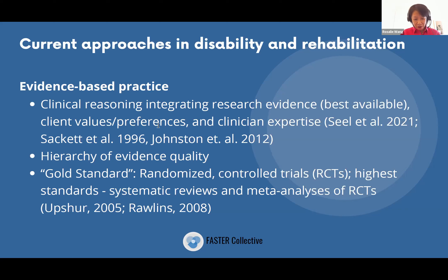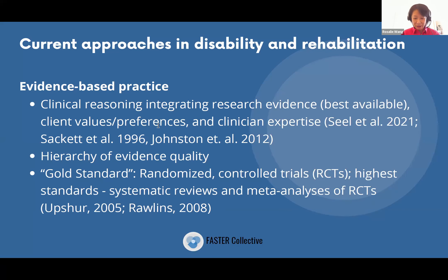Many of you are familiar with current approaches in disability and rehabilitation grounded in evidence-based practice, which stresses that clinical reasoning integrates the best available research evidence, client values and preferences, and clinical expertise. These elements of evidence-based practice are not in debate. What we do have concerns with is the hierarchy of evidence quality, which often places randomized controlled trials as the gold standard, with the highest standard being systematic reviews and meta-analyses of randomized controlled trials.